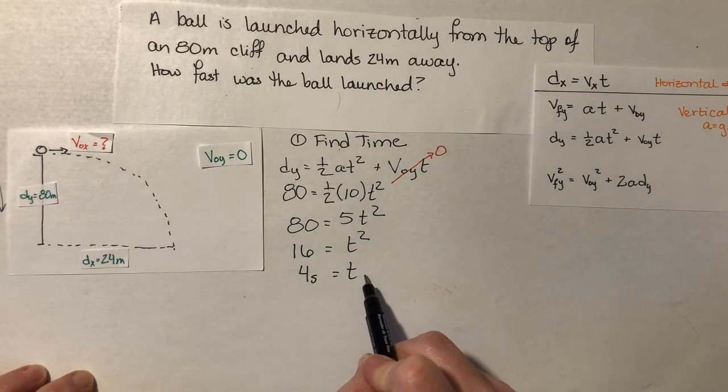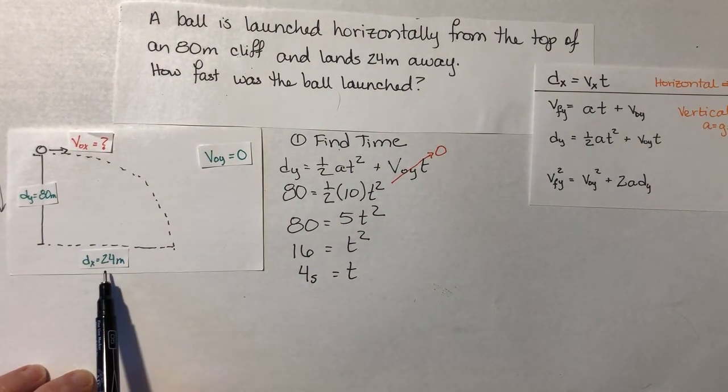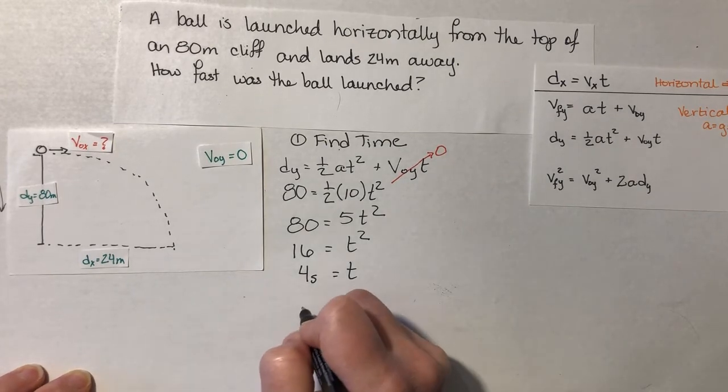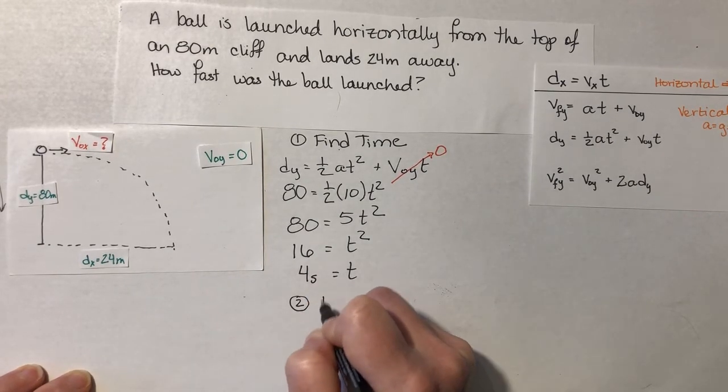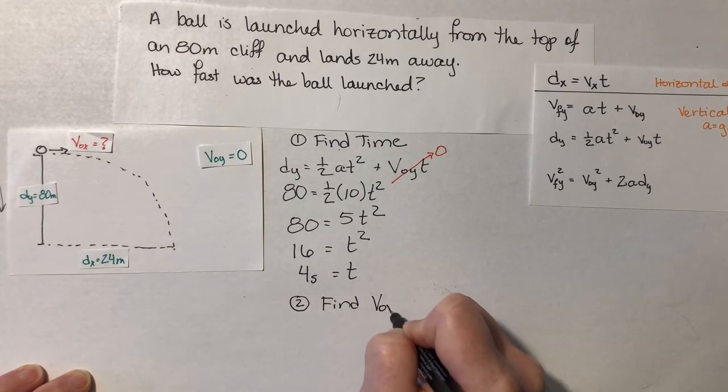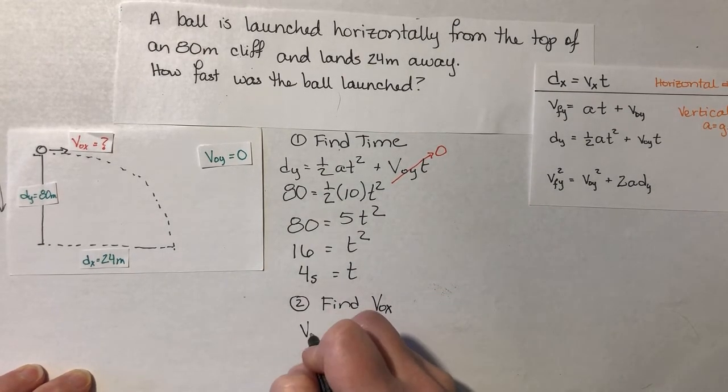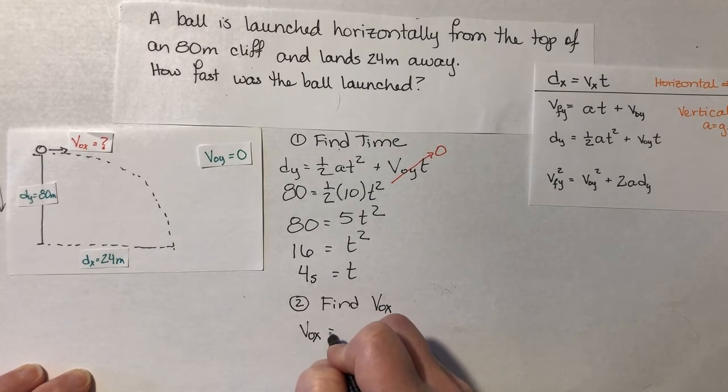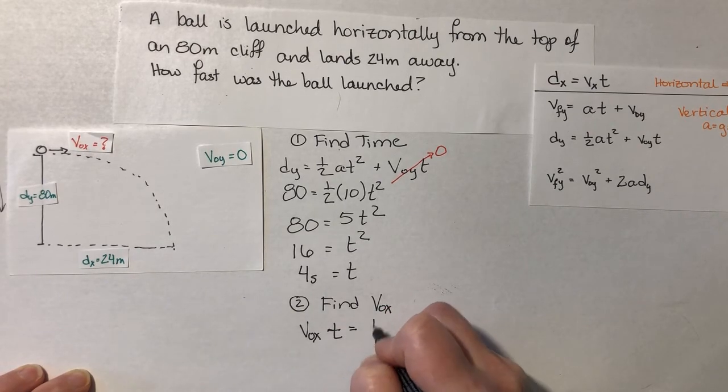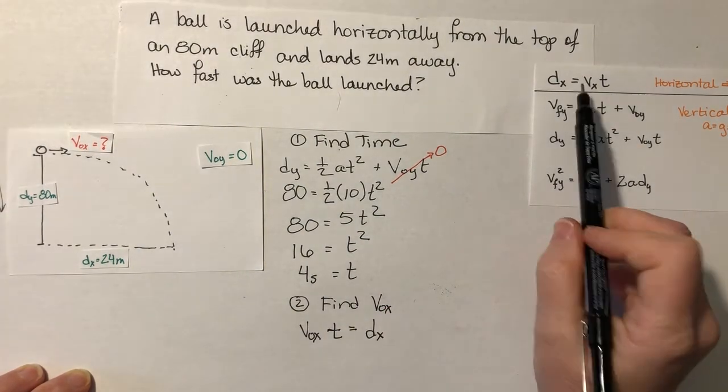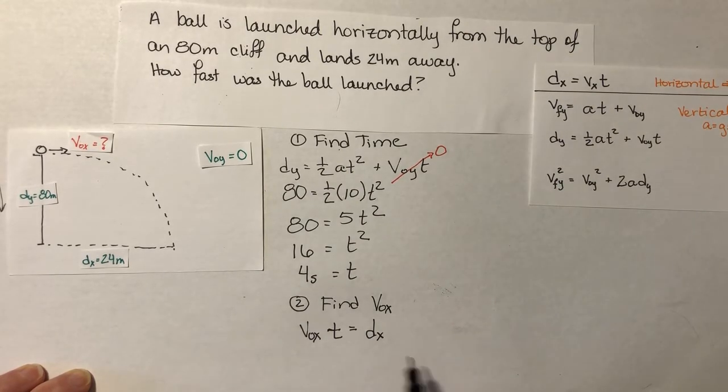Now that I have time and I have horizontal distance, I can find initial velocity in the x direction. So v0x times time equals distance in the x direction. I wrote this equation out just reversed it. So if I want to solve for v0x, I'm going to divide both sides by t. v0x equals dx divided by t.